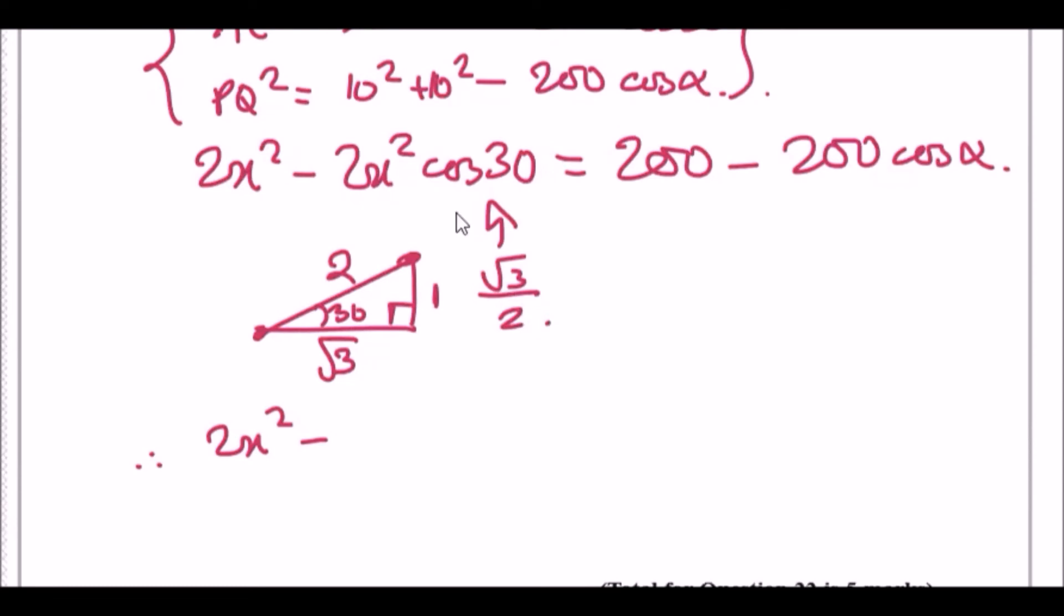You're left with √3 x² equals 200 minus 200 cos alpha.